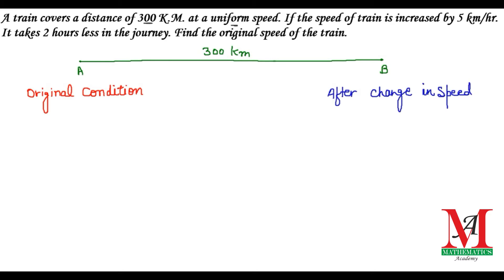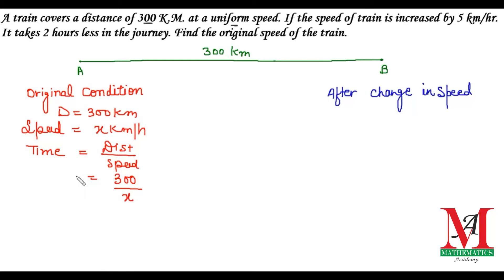As given in the question, let the speed of the train be x kilometers per hour. We know that the formula to find time is distance over speed. In this condition, the distance covered is 300 kilometers and the speed is x, therefore the time becomes 300/x hours.